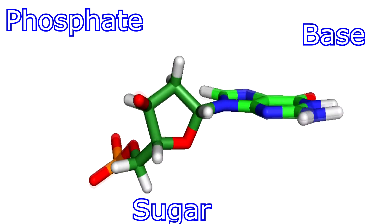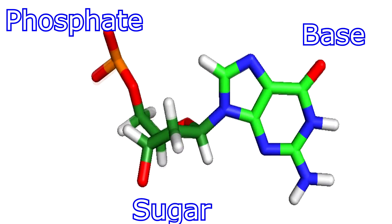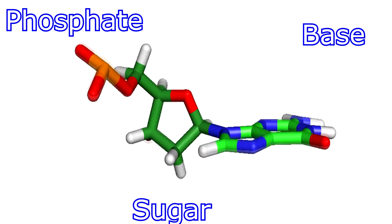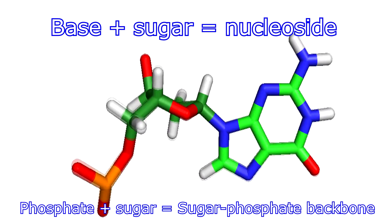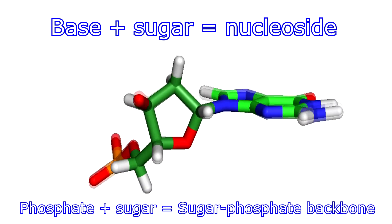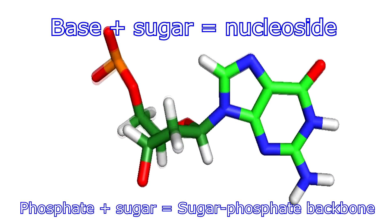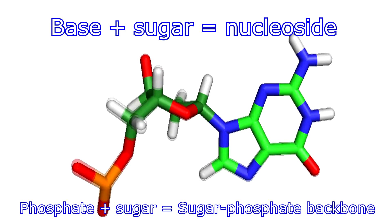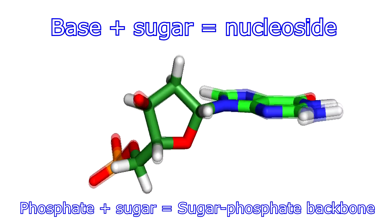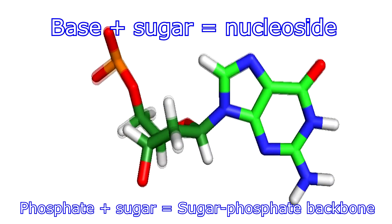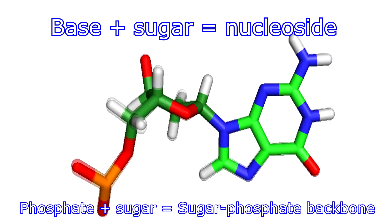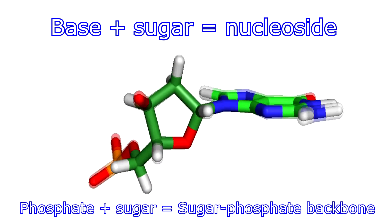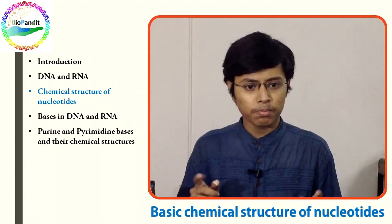Excluding the phosphate group, the base plus the sugar unit is called a nucleoside. Excluding the base, the sugar and the phosphate together are jointly called the sugar-phosphate backbone.